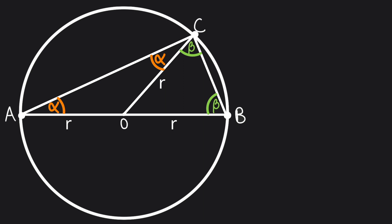We know that the sum of the interior angles in a triangle is 180 degrees. Therefore, alpha plus alpha plus beta plus beta is equal to 180 degrees.